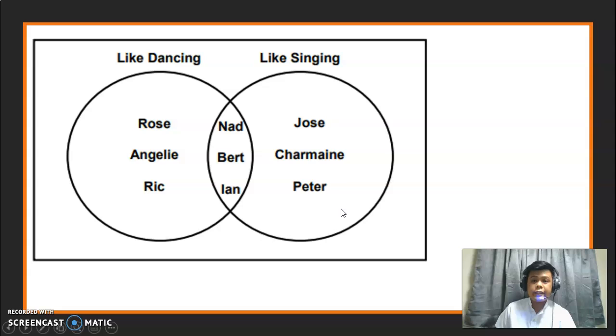I have here two sets. You have set D and set S. Set D involves the students who like dancing, while set S involves the students who like singing. We noticed that the two sets intersect. Meron tayong overlap na part. So, ibig sabihin, may mga students na gusto yung dancing, meron din gusto yung singing. Let's answer some questions.